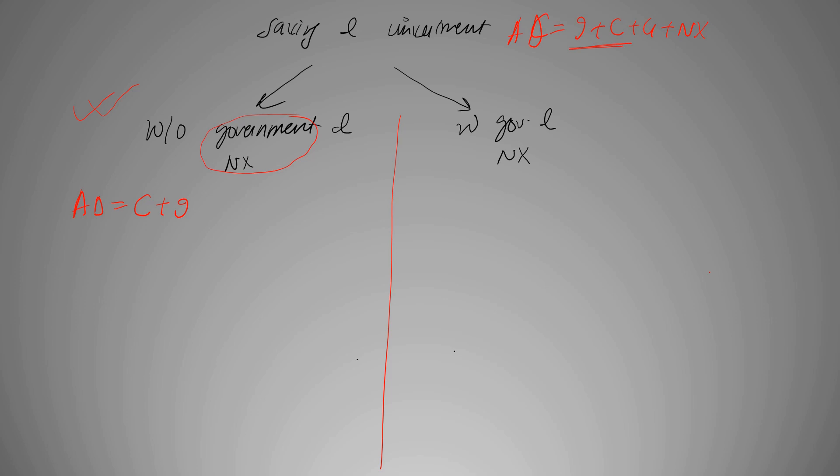This is our aggregate demand. When we talk about supply or output, about what we do with that income, we either consume it or save it. Since the economy is at equilibrium, AD is equal to Y, therefore C plus I is equal to C plus S. Canceling both, we get I is equal to S. It shows that the economy is at equilibrium if its investment is equal to savings.